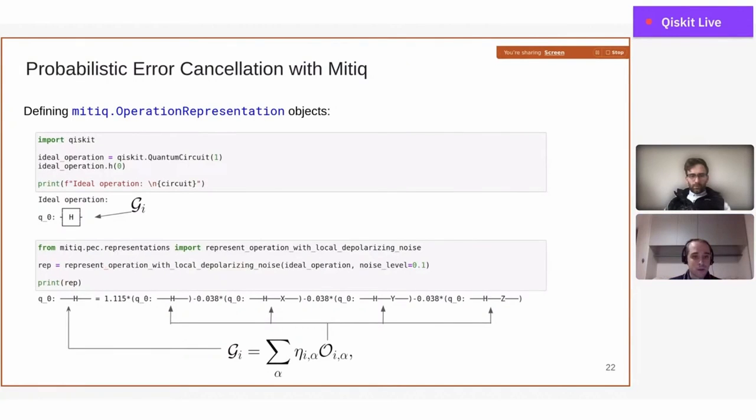What is the key ingredient to apply this in Mitiq? The key ingredient is the operational representation class, which is an object designed exactly to represent this type of linear combination of noisy gates that produces an ideal gate. For example, if we define the ideal operation which is the Hadamard applied to qubit 0 with this circuit, and if we assume that we have depolarizing noise on the device, you can easily obtain one of these operational representations.